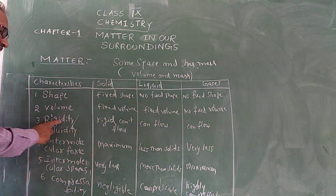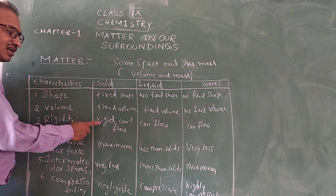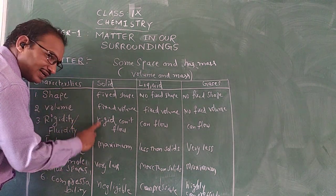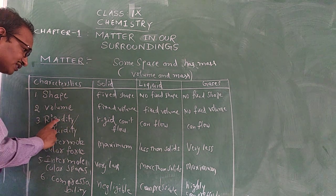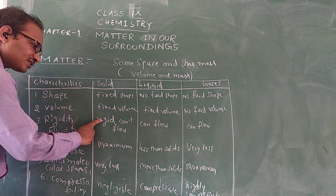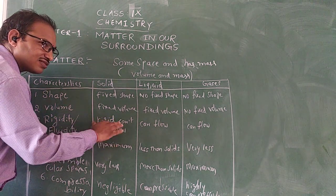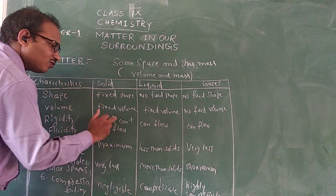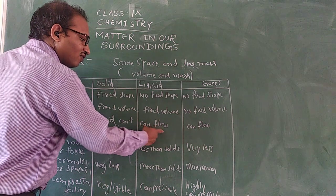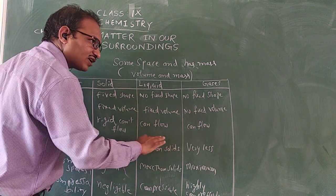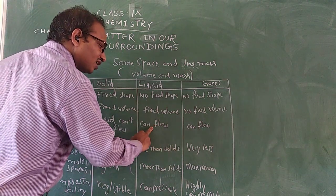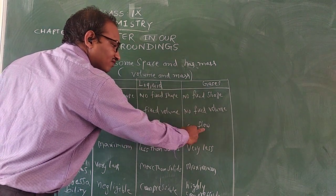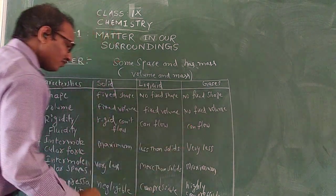Considering rigidity: solids are rigid, meaning they cannot flow or move. Liquids can flow, so liquids are fluids. Gases can also flow, so gases are also a kind of fluid.